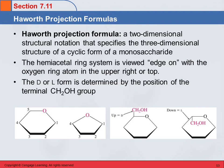We looked at Fischer Projections, which are a way of two-dimensionally representing these three-dimensional carbohydrates when they're in their open chain form. And then we looked at how these monosaccharides actually exist almost entirely in a cyclic form. So now we're going to look at a way to represent the cyclic form in two dimensions. This is called a Haworth Projection — your book calls it a Haworth Projection formula, but I just call it a Haworth Projection.